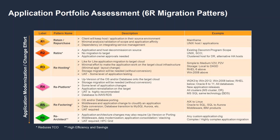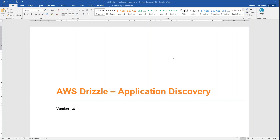You also need to understand how you are going to test that application once you migrate, and what the different dependencies are — for example, there may be other applications relying on the data of this application. You also need to understand the business impact if this application is not working. You can use a template or document for the application you select to re-platform or move to a new operating system.